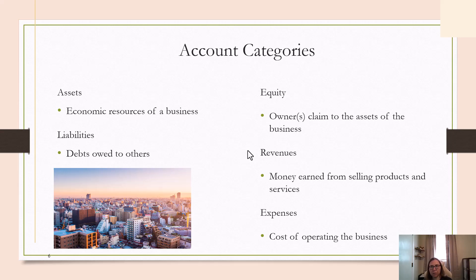Liabilities are debts. Equity would be the owner's claim to the assets of the business — in other words, the owner's investment. Revenues would be money earned from selling products and services, so it's the sale price. And expenses are your general day-to-day costs of operating your business.